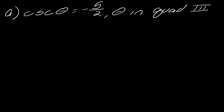For the first example, I've got cosecant of theta equals negative 5 over 2, and I'm told that theta is in quadrant 3. In quadrant 3, which functions are positive? All students take calculus — so the only functions that are positive in quadrant 3 will be tangent and cotangent. I'll just put a little note up there for myself.